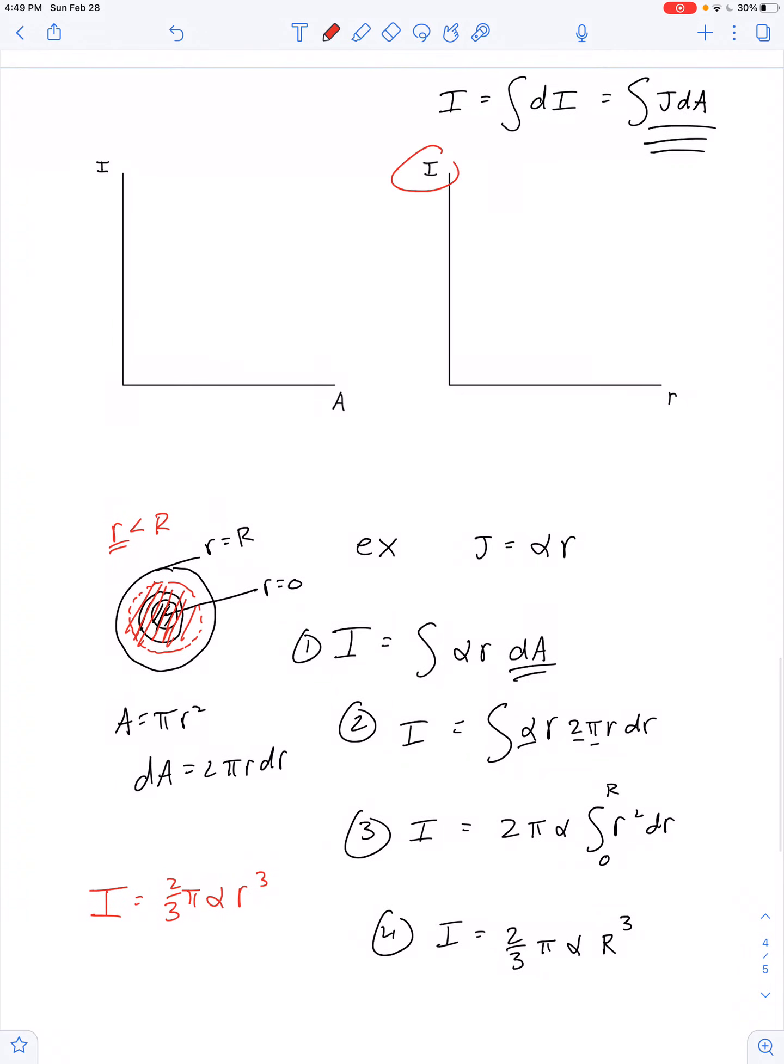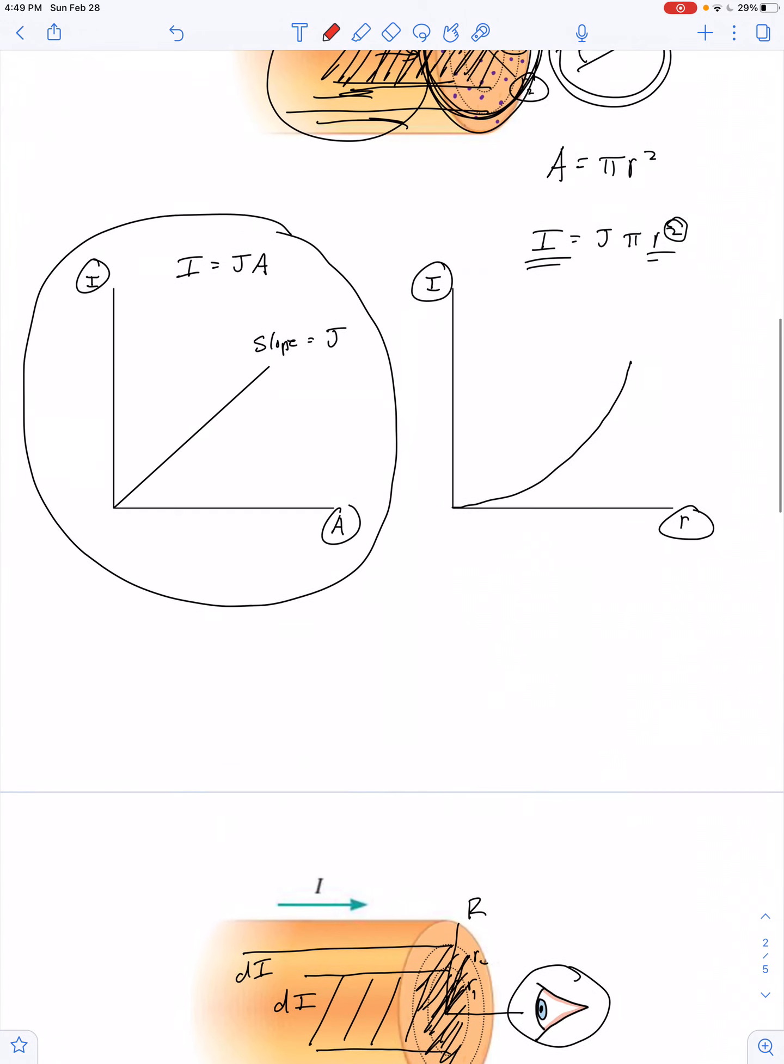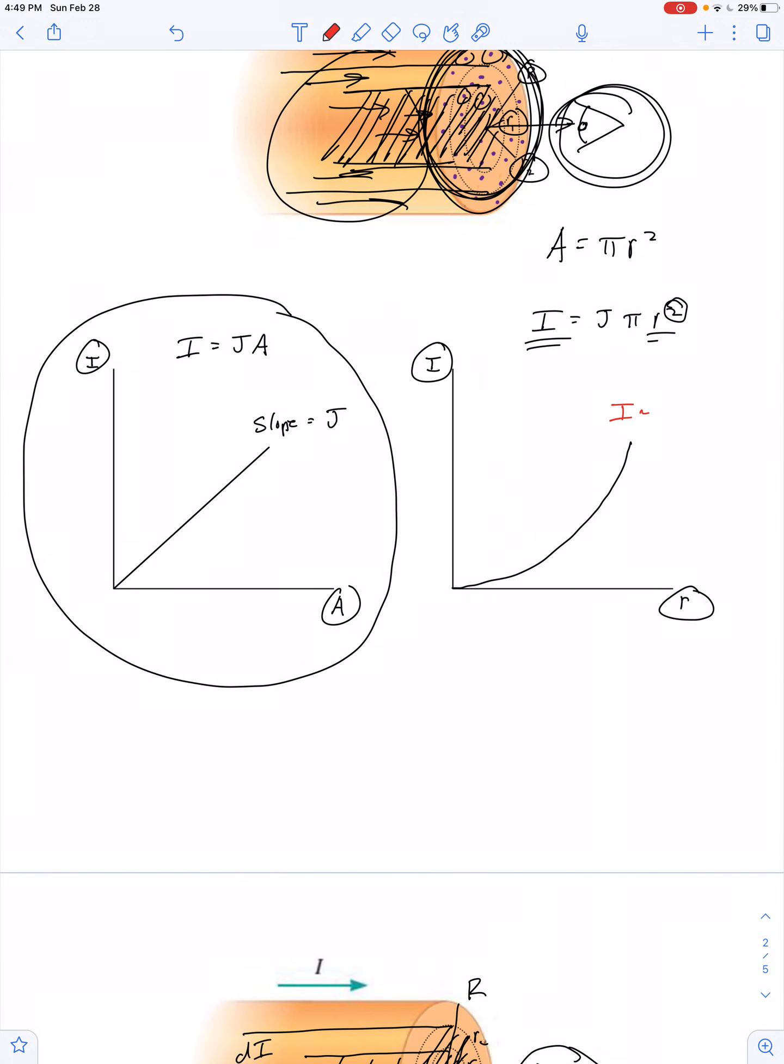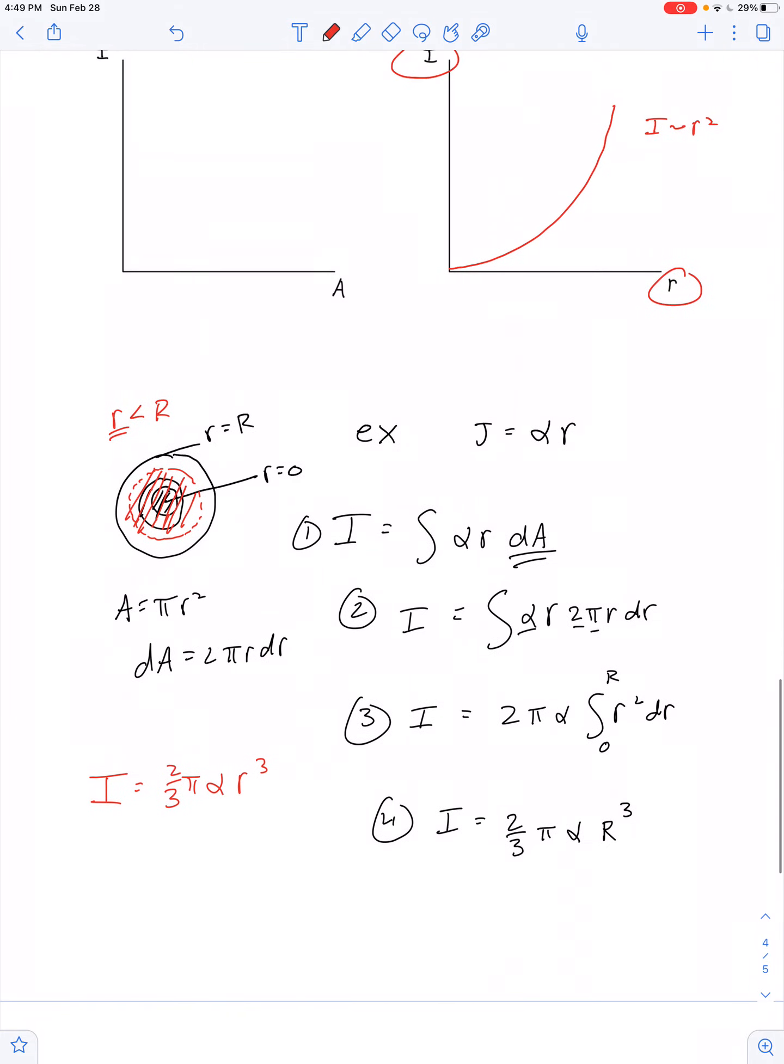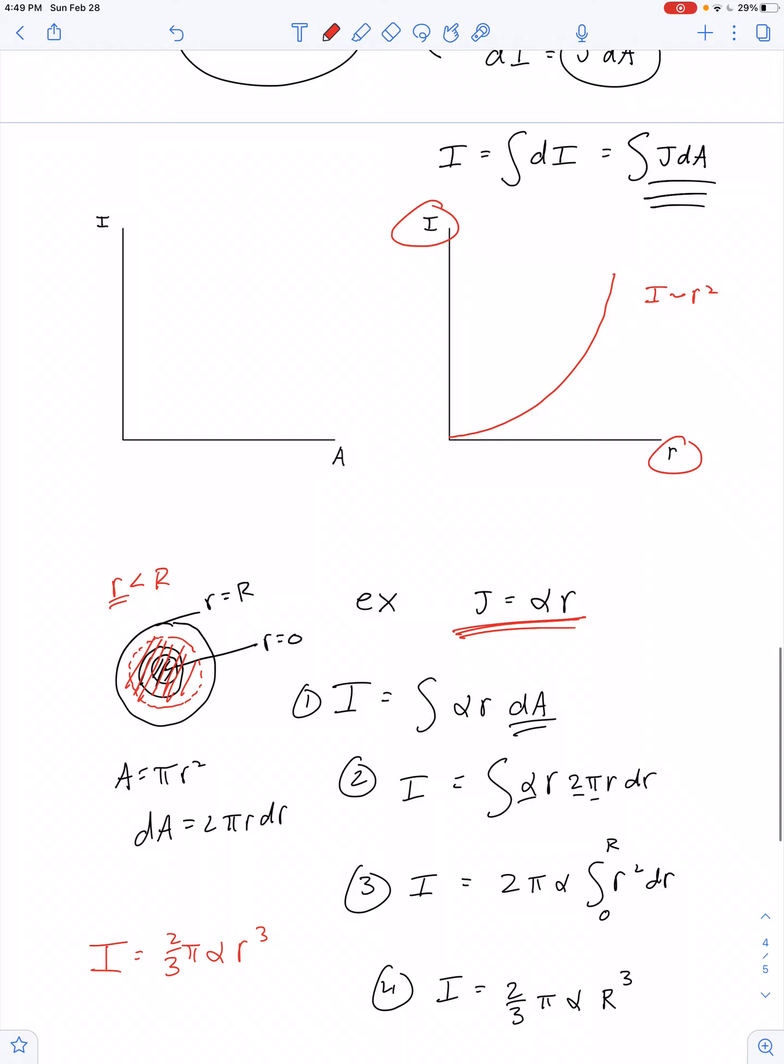So, our graph of current versus radius is still concave up, but it's not I proportional to R squared as it was in our previous example here where the current density was uniform. In this example, based on this hypothetical, this would actually be I is proportional to R cubed. And the current versus the area is no longer linear. That graph is also concave up.